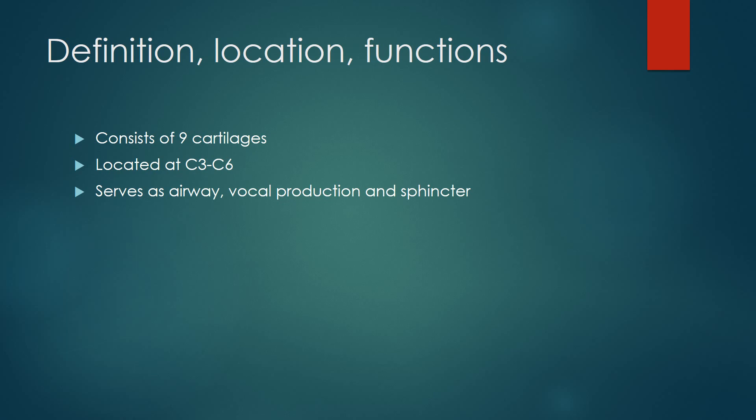The larynx, also named as the voice box, consists of nine cartilages interconnected by membranes, joints, and ligaments. The larynx is located approximately at the level of the C3 until C6 vertebral bodies. It is anterior to the esophagus and to its sides we have the thyroid gland. The larynx serves as an airway, a vocal production organ, and as a sphincter, disallowing entry of foreign objects into our airway.